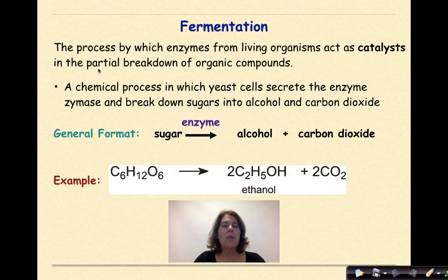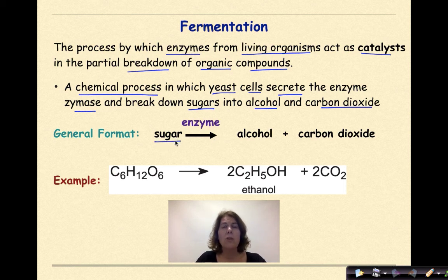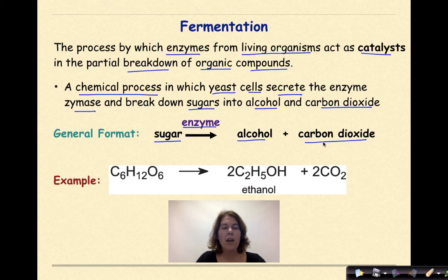Fermentation is the process by which enzymes from living organisms act as catalysts in the partial breakdown of organic compounds. It is a chemical process in which yeast cells secrete the enzyme zymase and break down sugars into alcohol and carbon dioxide. The general format involves some type of sugar — such as glucose or fructose — with an enzyme driving the process and producing alcohol and carbon dioxide as the two products. An example is glucose producing ethanol and carbon dioxide.